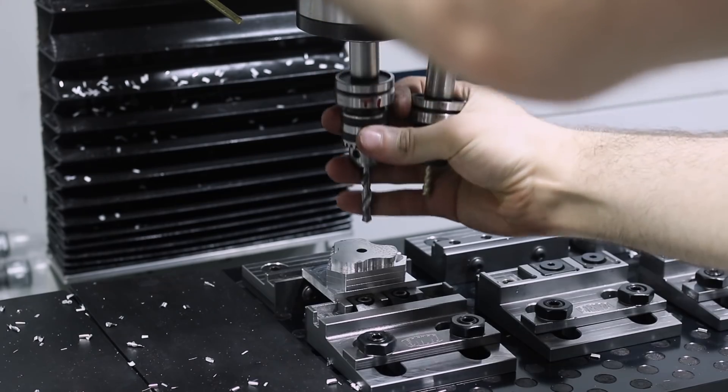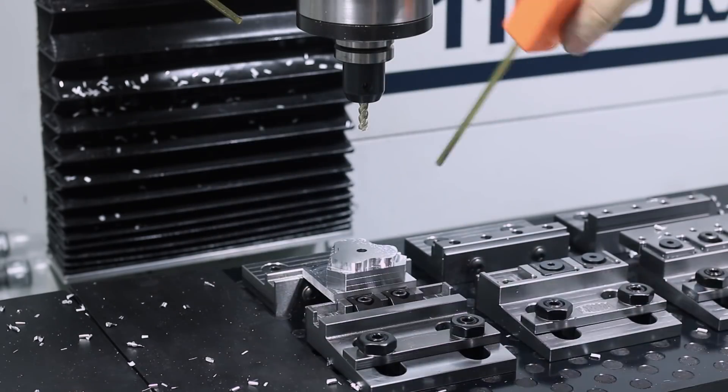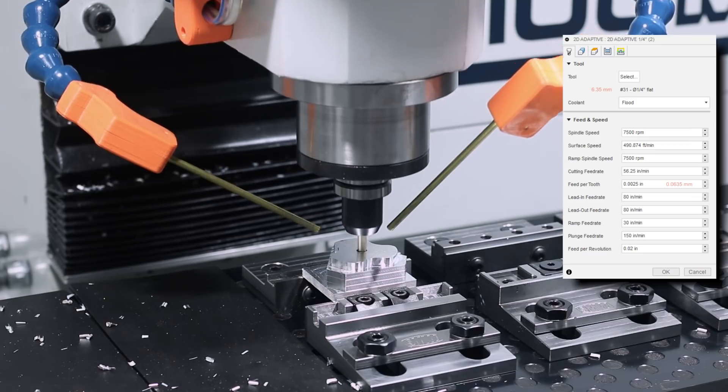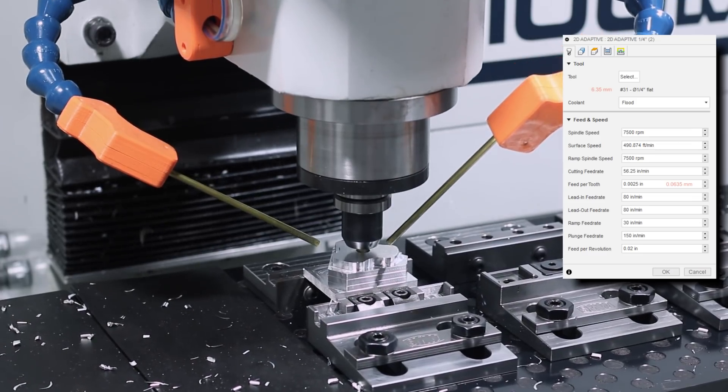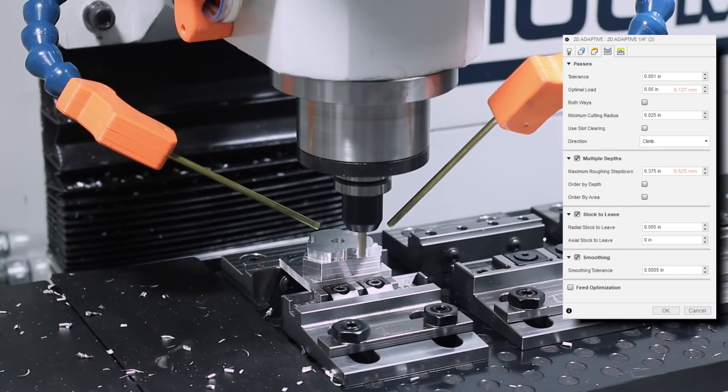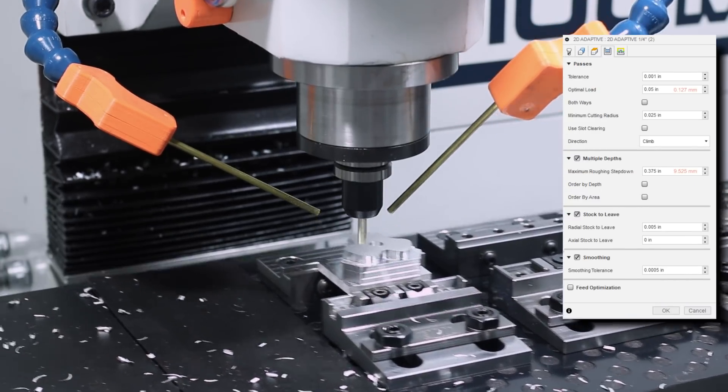Once that's done, we'll come in with a 2D adaptive and open up this bore using a quarter inch 3 flute variable flute end mill from Lakeshore Carbide. Max RPM at 7500 and 2.5 thou per tooth. Optimal load at 50 thou and maximum roughing step down of 375.